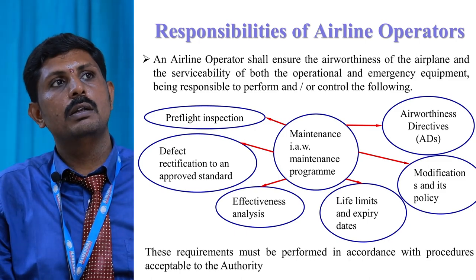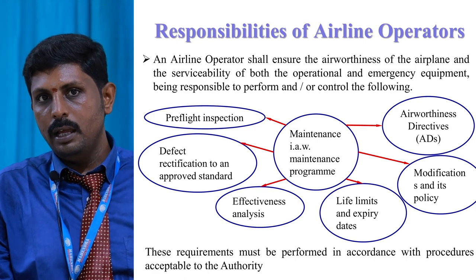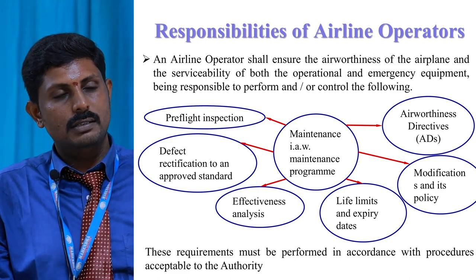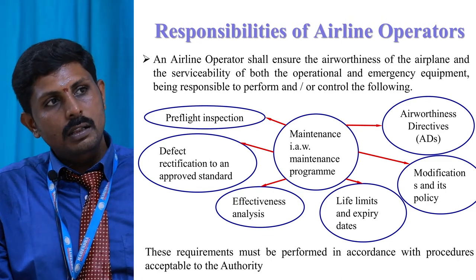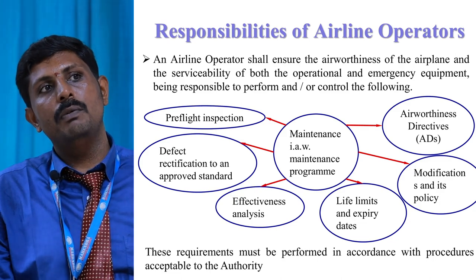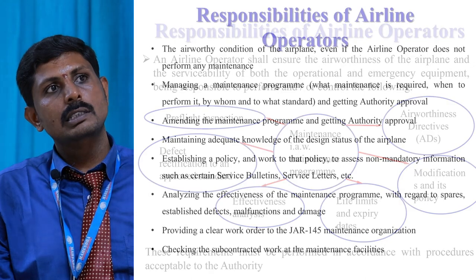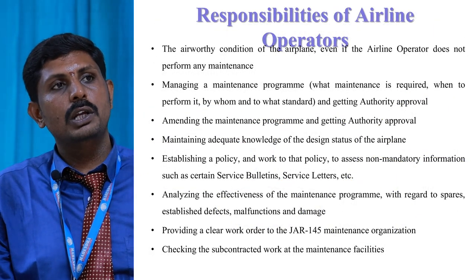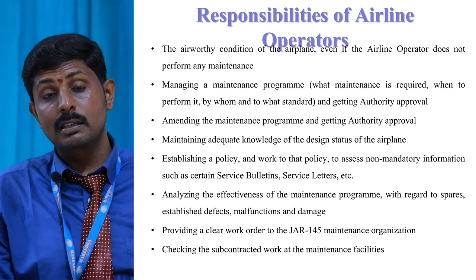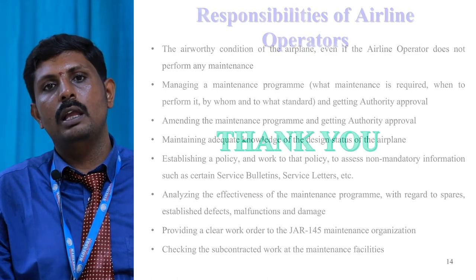The maintenance responsibility of an airplane operator starts from the technician, ground handling staff, aircraft maintenance engineer, co-pilot, pilot, and airline staff. Before that, we need to know about the pre-flight inspection — rectifying defects, checking leakages, checking the tires, effectiveness analysis, life limits and expiry dates of particular components, and whether modifications are done or not. The pilot and the maintenance engineer should know the policy. Airworthiness directives and some manuals are required about the components involved in the airplane. All these things should be in a checklist covering the fuselage, engines, landing gear, and the overall airplane.